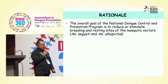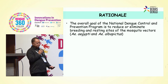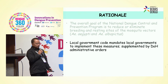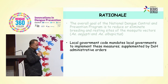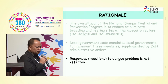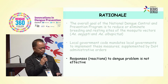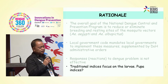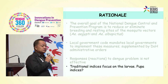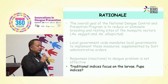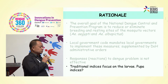The goal of the National Dengue Control Prevention Program is to reduce and eliminate breeding sites of mosquito vectors in the Philippines, basically by doing larviciding and the like. The local government code mandates local government to implement these measures, supplemented by different administrative orders. Responses to the dengue problem are not however effective because of several factors. Traditionally, we've been using larval indices or the Stegomyia indices, but we're looking into the use of pupal index as an application if it has epidemiological significance in controlling dengue.